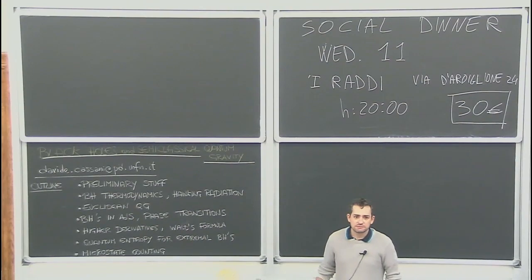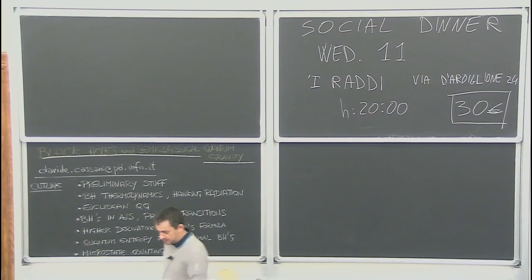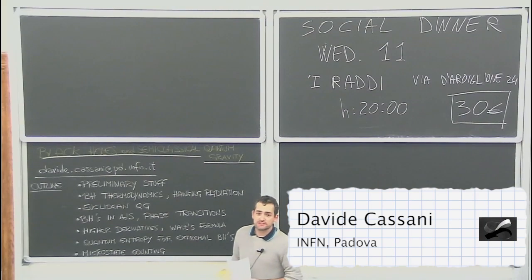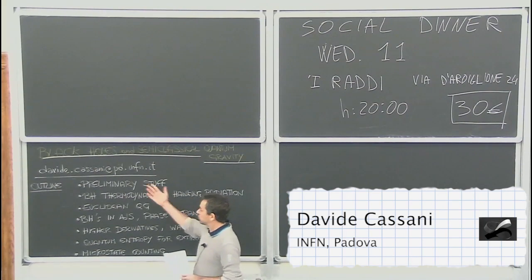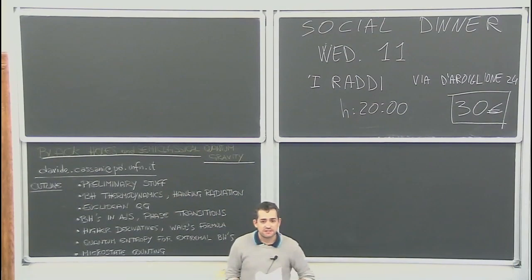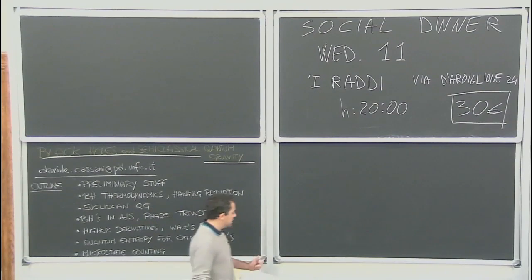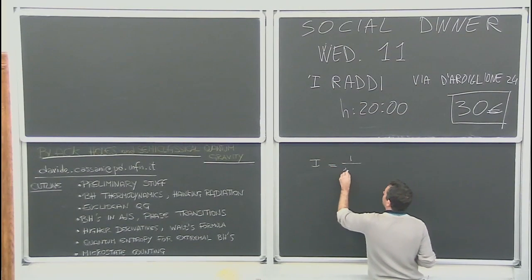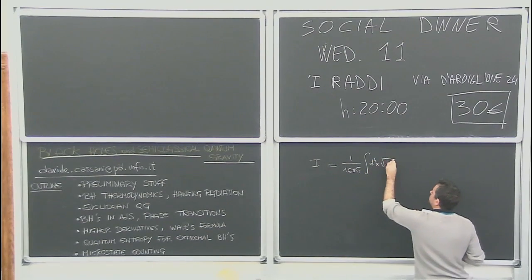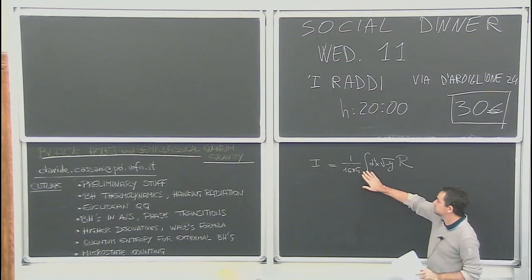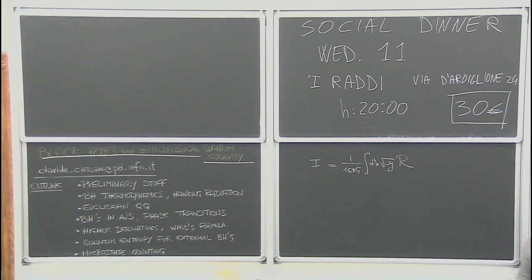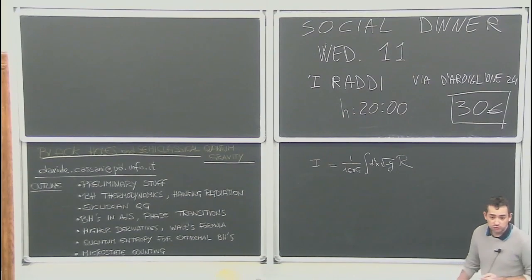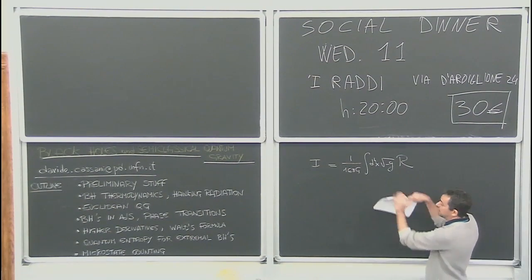Thanks Carlo. So I'll start with some words of motivation for this course, which is about black holes and quantum gravity — or maybe better, semi-classical quantum gravity. As we all know, general relativity is a very nice theory, but since it has a dimension-full coupling constant, seen as a quantum field theory it is non-renormalizable.